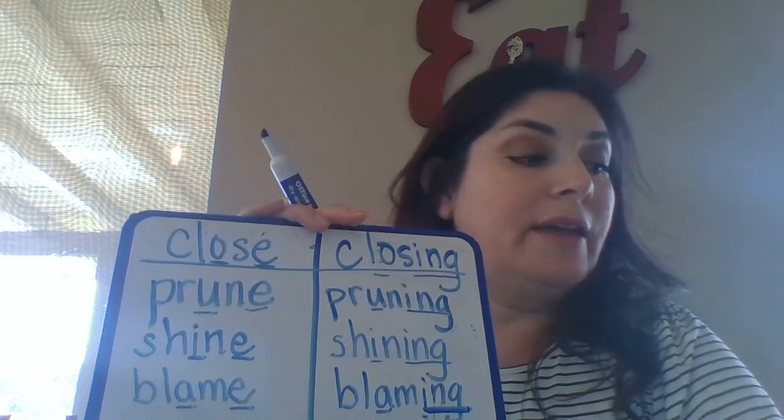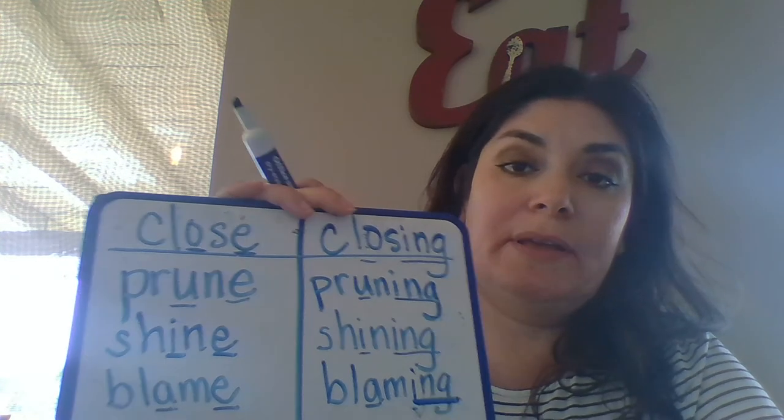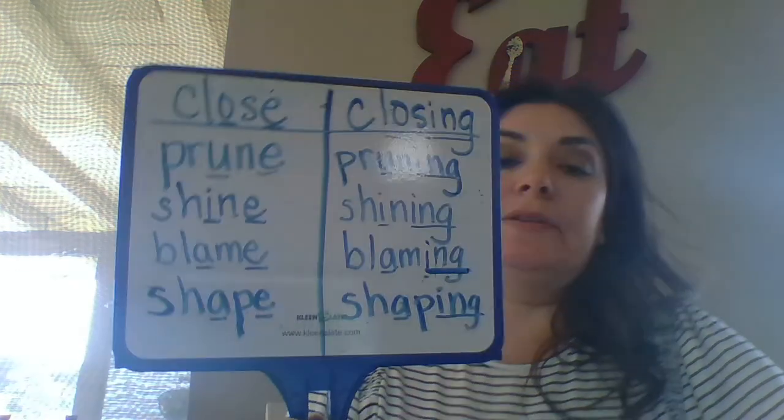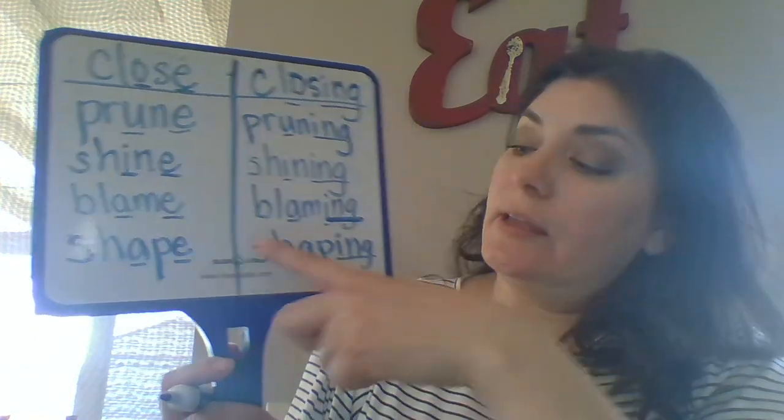Your last word is 'shape.' Think about that word before you write — think about the sounds in 'shape' and underline the two vowels that show the long vowel sound. Then go ahead and write the word 'shaping' on the right side. Underline the vowel in 'shaping' and the ending.